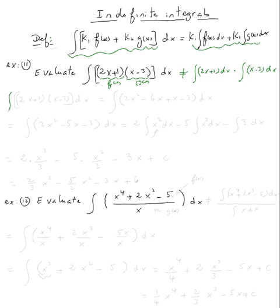So what we need to do is FOIL: the integral of (2x + 1)(x − 3) dx. If you FOIL it, you get 2x times x = 2x squared, 2x times negative 3 = negative 6x, plus 1 times x = x, plus 1 times negative 3 = negative 3 dx. This equals the integral of 2x squared minus 5x minus 3 dx.